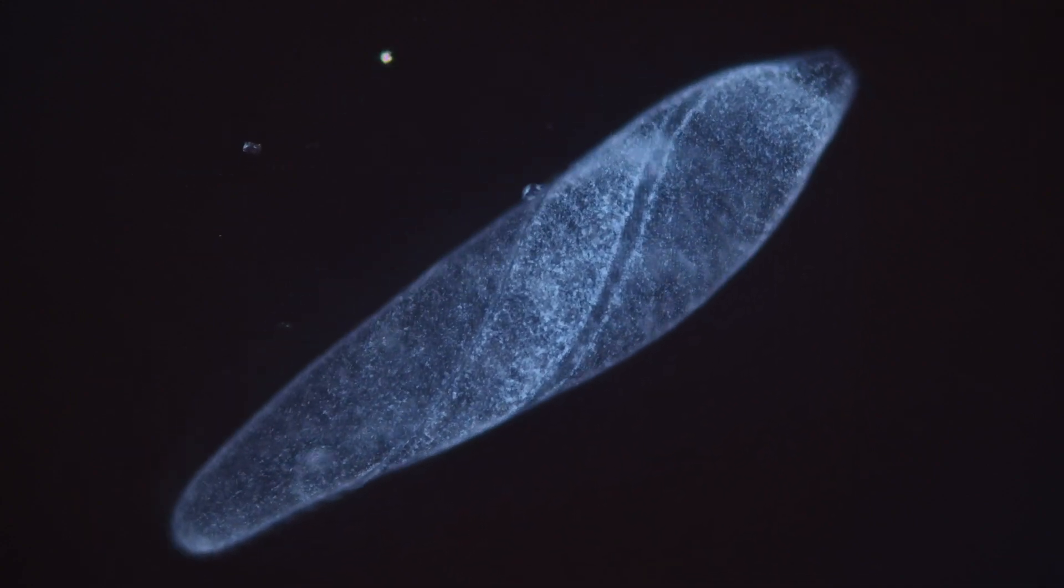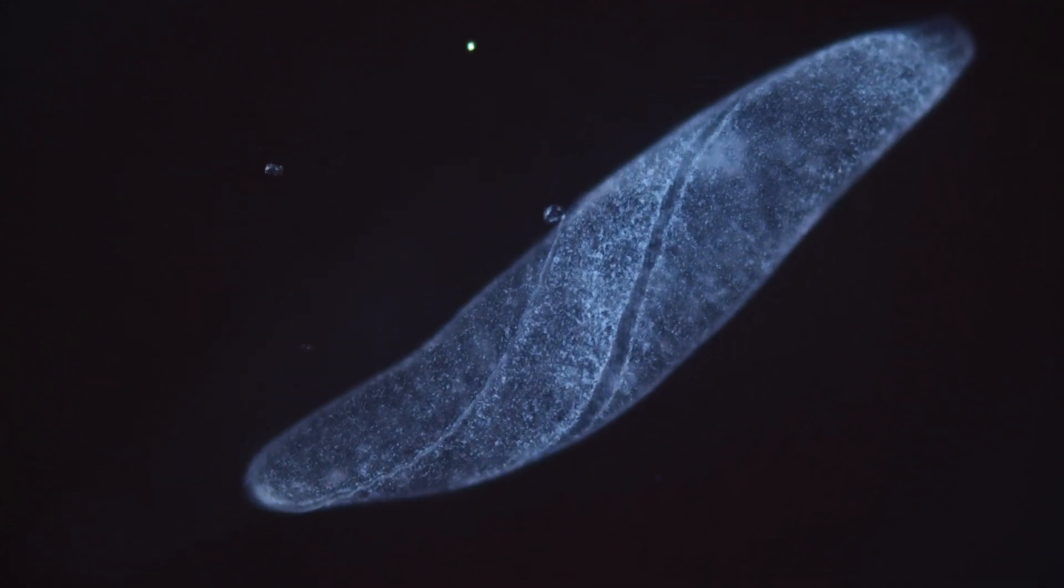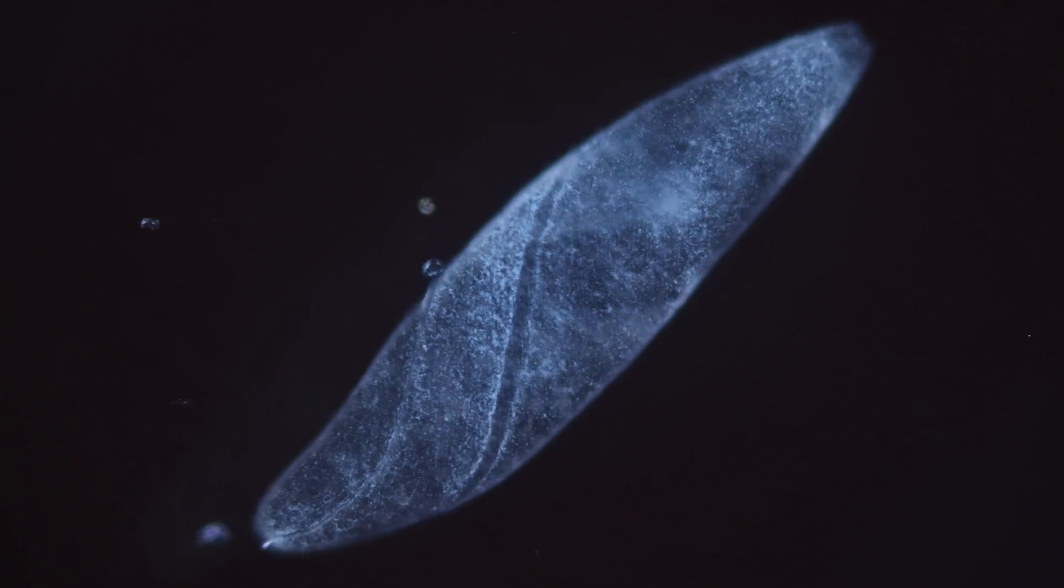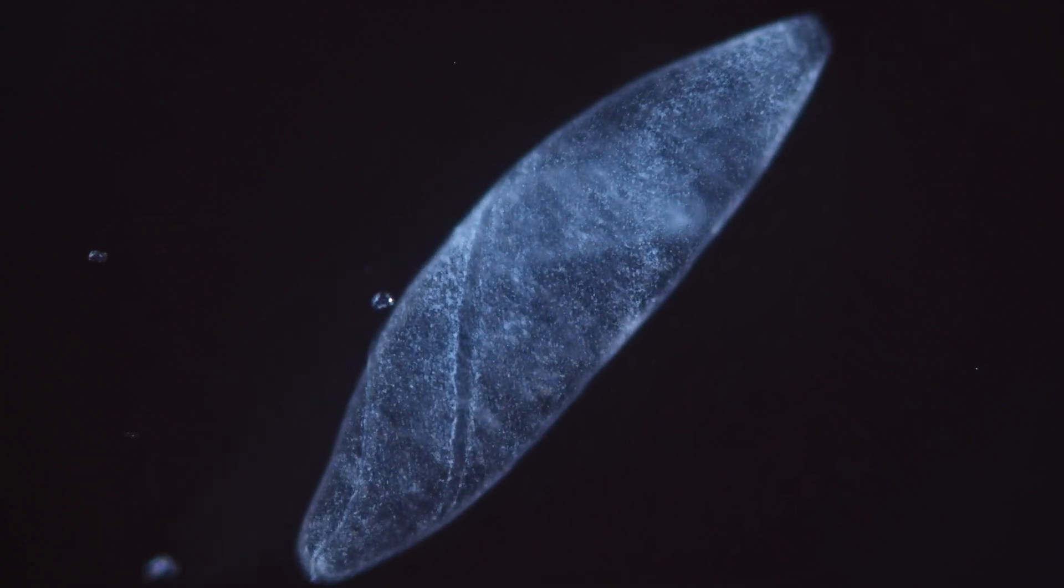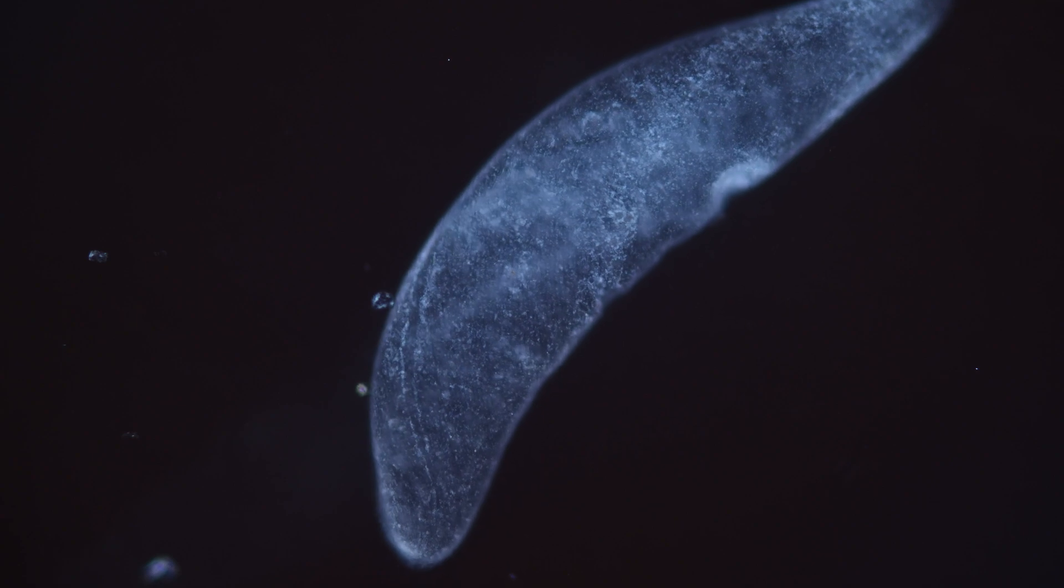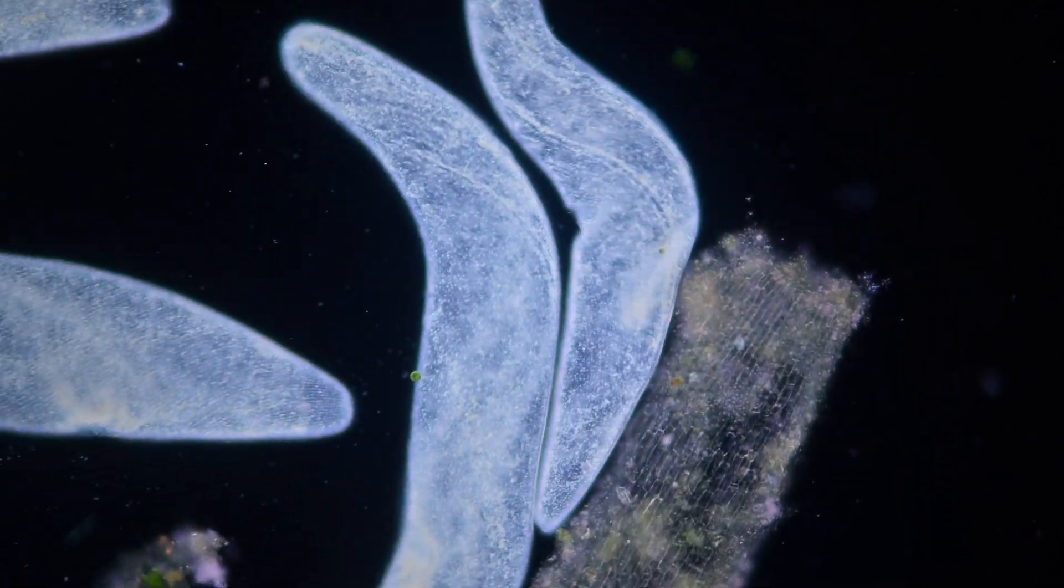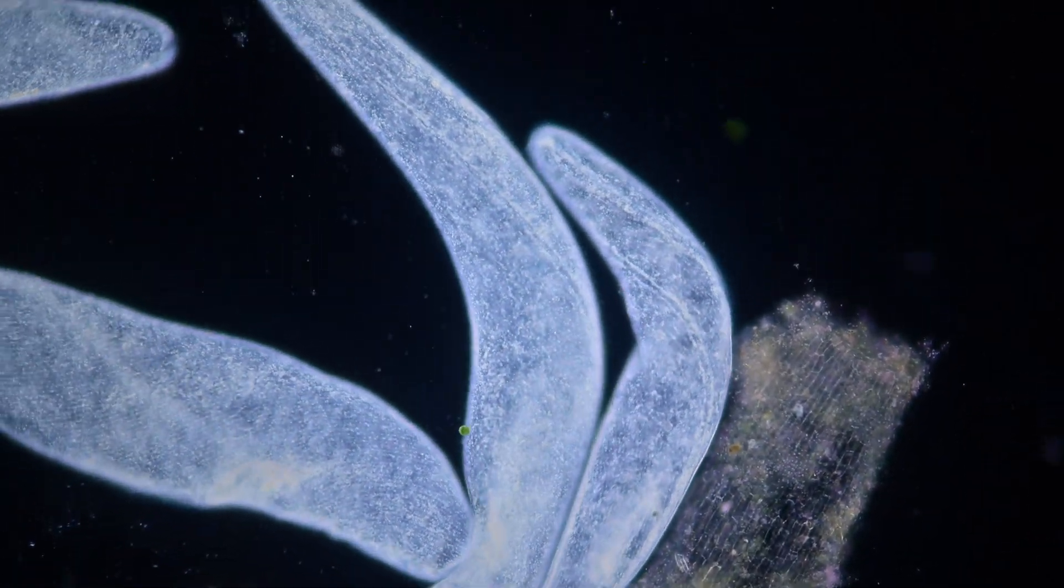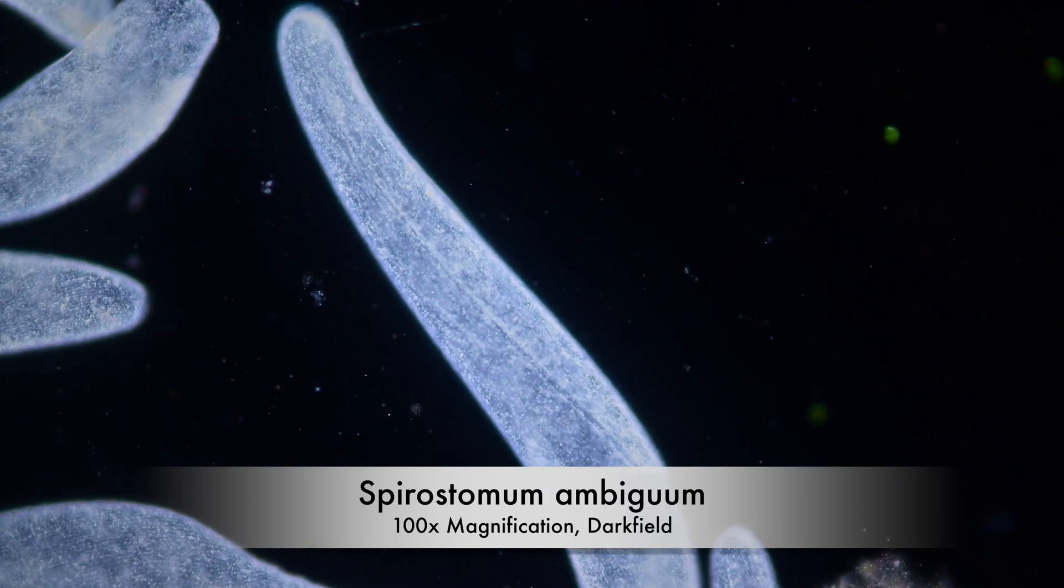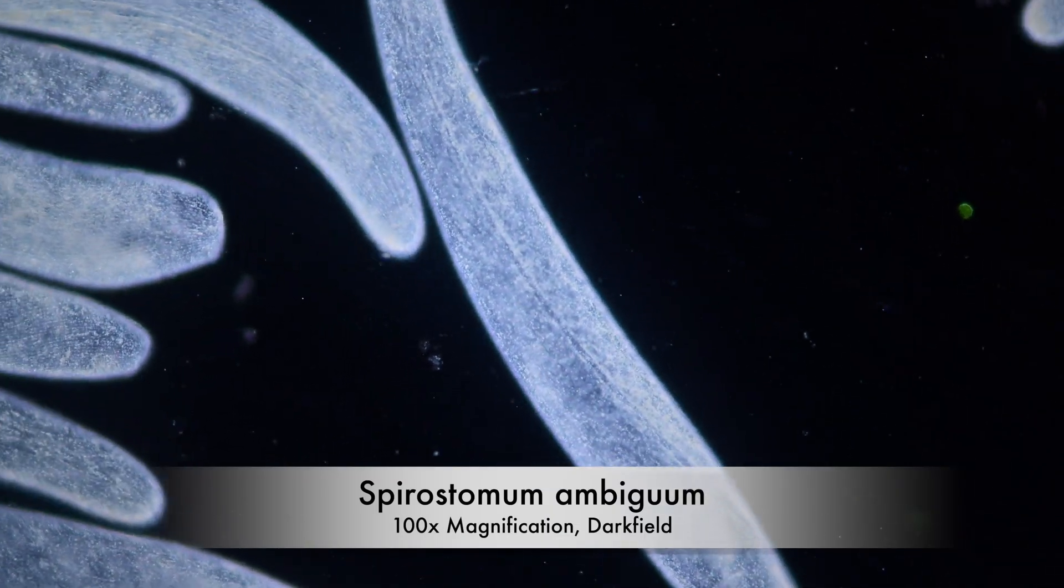What makes this process even more remarkable is that Spirostomum can repeat these explosive contractions over and over. Until now it has not been clarified exactly after how many consecutive contractions the cells take damage. This superpower has caught the interest of scientists who want to create tiny superfast robots.